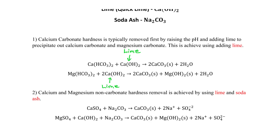Both of these reactions are given in the reference handbook on page 341 — FE Handbook 10.0.1, the latest one — under the lime-soda softening equations. This covers calcium carbonate hardness and magnesium carbonate hardness removal, both of which use lime.